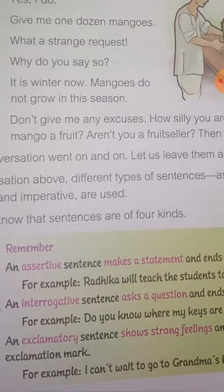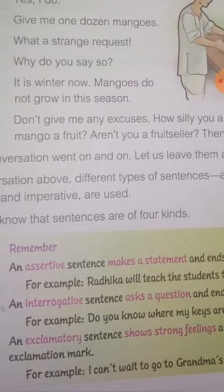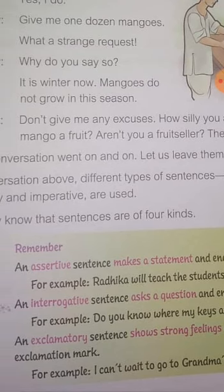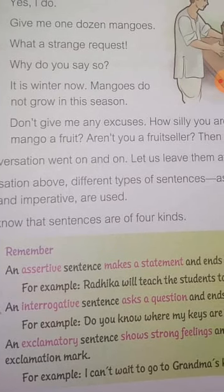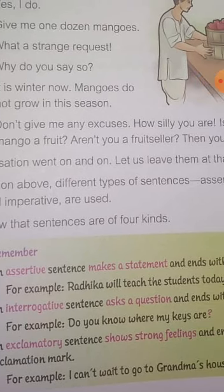You already know sentences are of four kinds. How many kinds of sentence are there? There are four kinds of sentence: assertive, interrogative, exclamatory, and imperative.